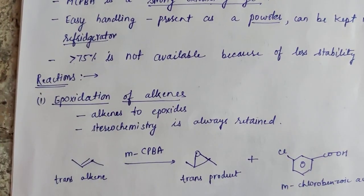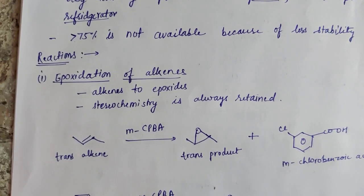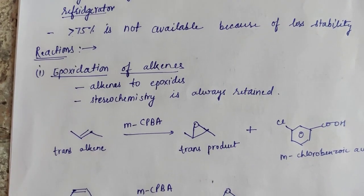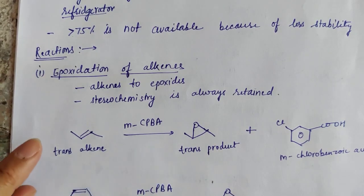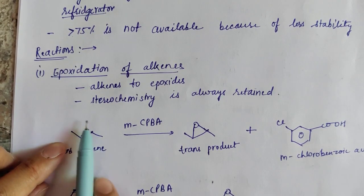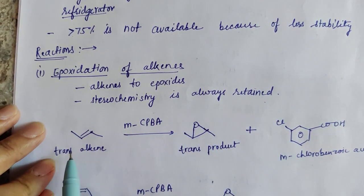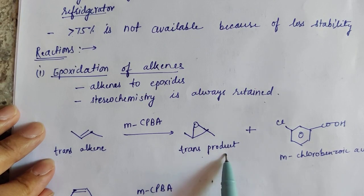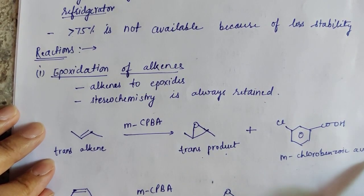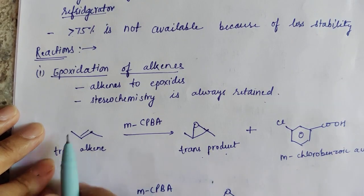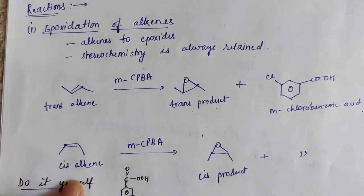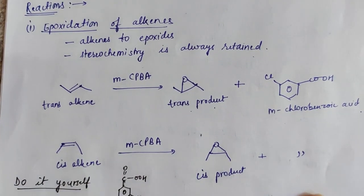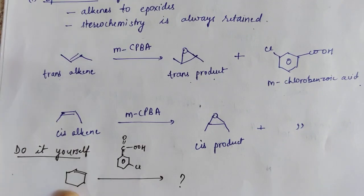Looking at the reactions, MCPBA can convert alkenes into epoxides. In the case of MCPBA, that is meta-chloroperbenzoic acid, epoxide formation takes place and stereochemistry is always retained. If you have a trans-alkene, the product obtained will be trans and you will obtain meta-chlorobenzoic acid as byproduct. It just provides a nascent oxygen which forms an epoxide bond. Cis-alkene will provide a cis-product. Try to do this one yourself.